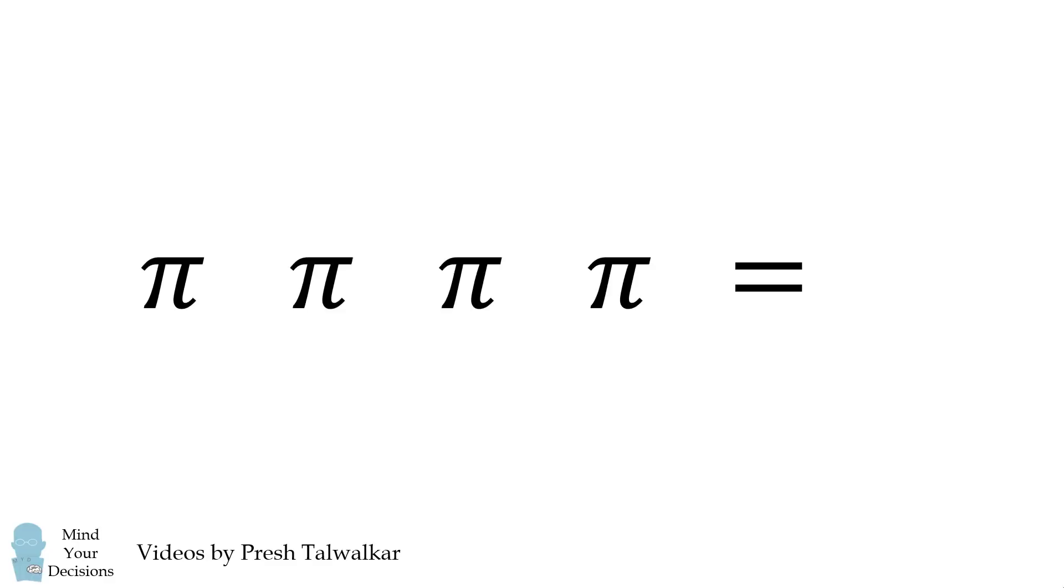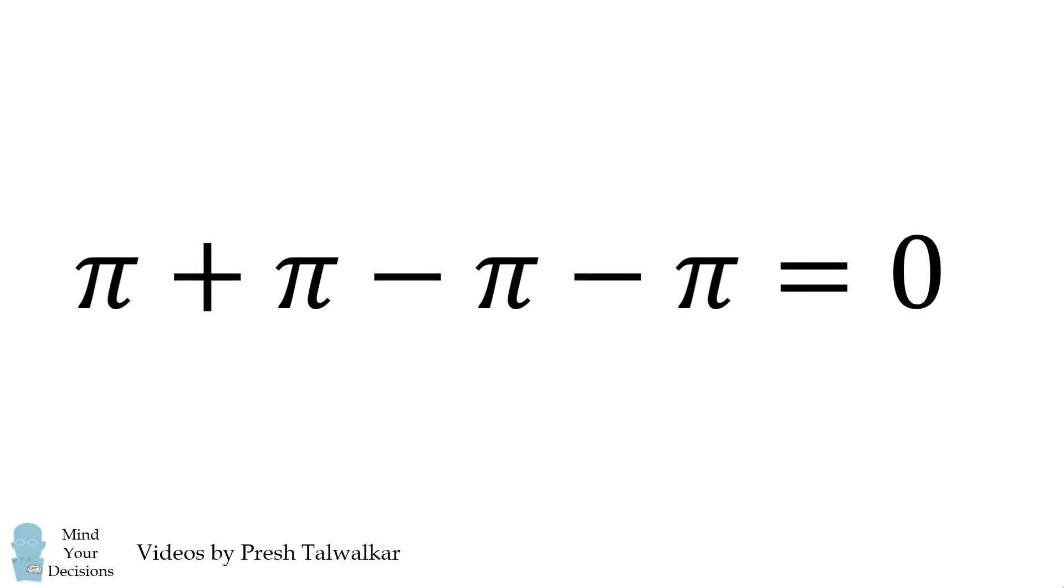We'll get started with an equation for zero. Here's one of the many equations you could have written. Pi plus pi minus pi minus pi is equal to zero.